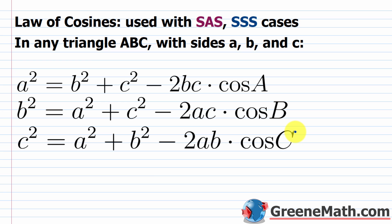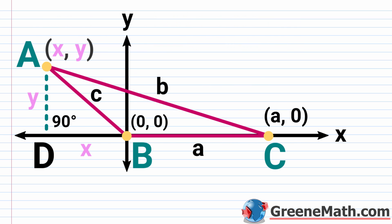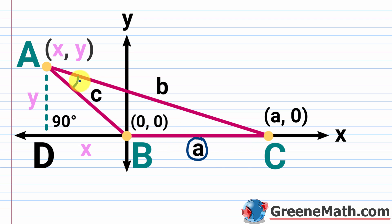You're always going to have a lowercase a, a lowercase b, and a lowercase c. Essentially, if you have an uppercase letter in your formula, that's for an angle measure. If you have a lowercase letter, that's for a side length — but these are paired up. So if I see an uppercase A in the formula, that's the measure of angle A. Then a lowercase a is the length of the side opposite angle A.